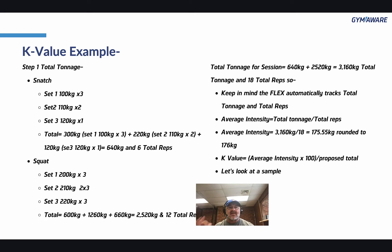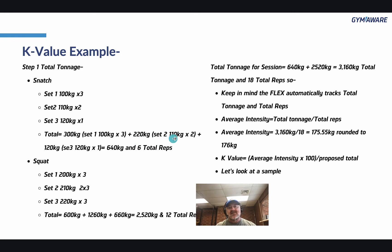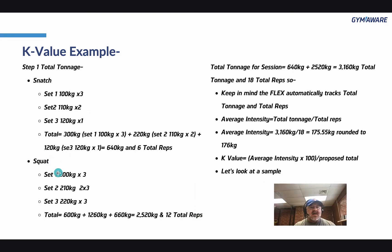Here's an example. Step one — total tonnage. For the snatch: first set is 100 kilos for 3 reps, 110 for 2, and 120 for 1. The total is 300 plus 220 plus 120, which equals 640 kilograms with 6 total reps. That's one, two, three, four, five, six reps.